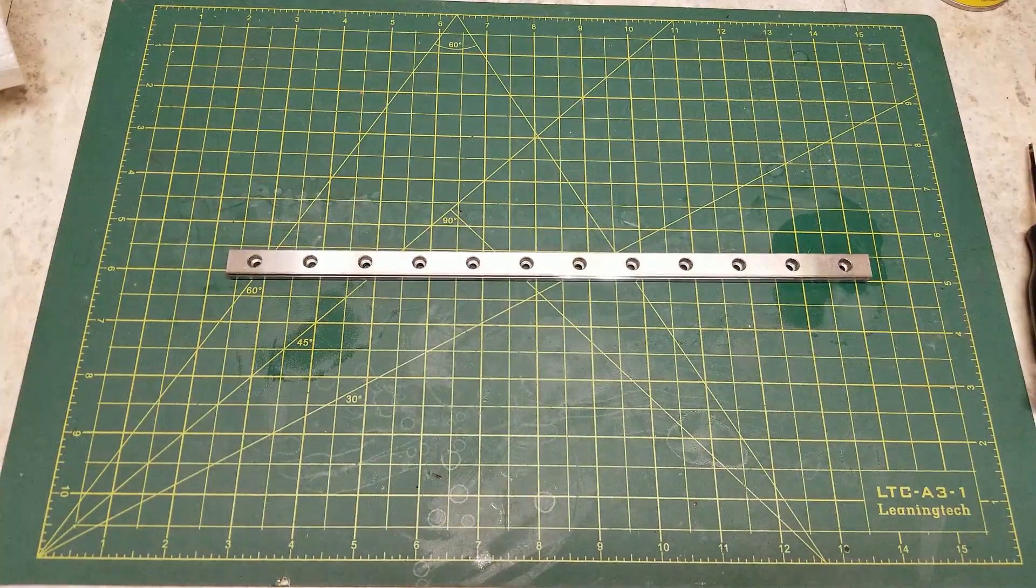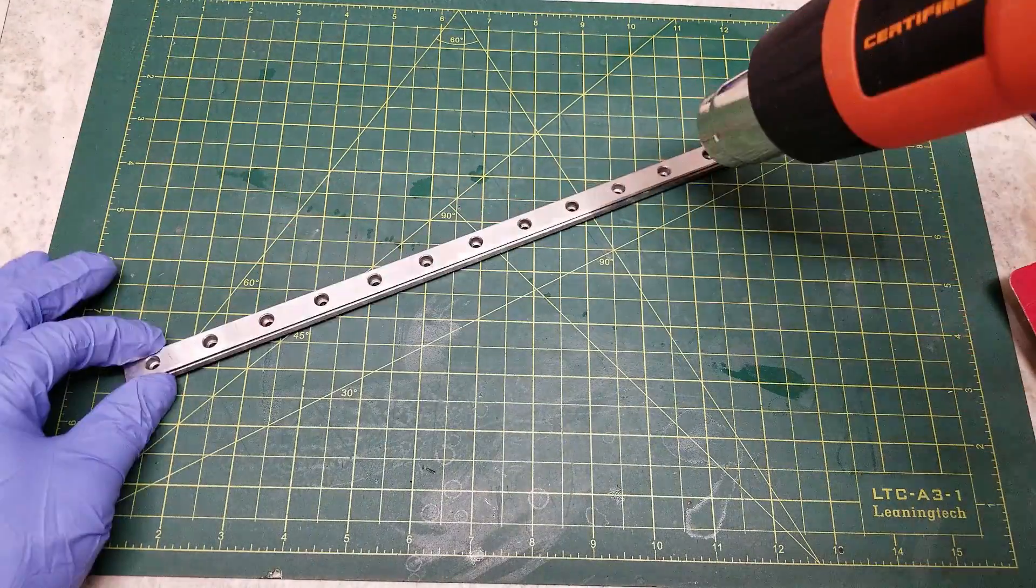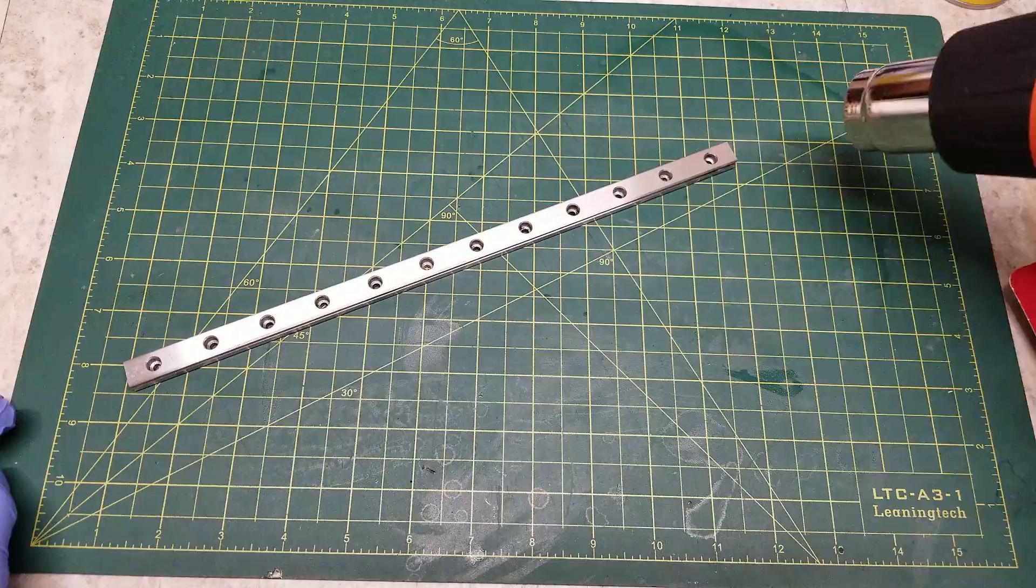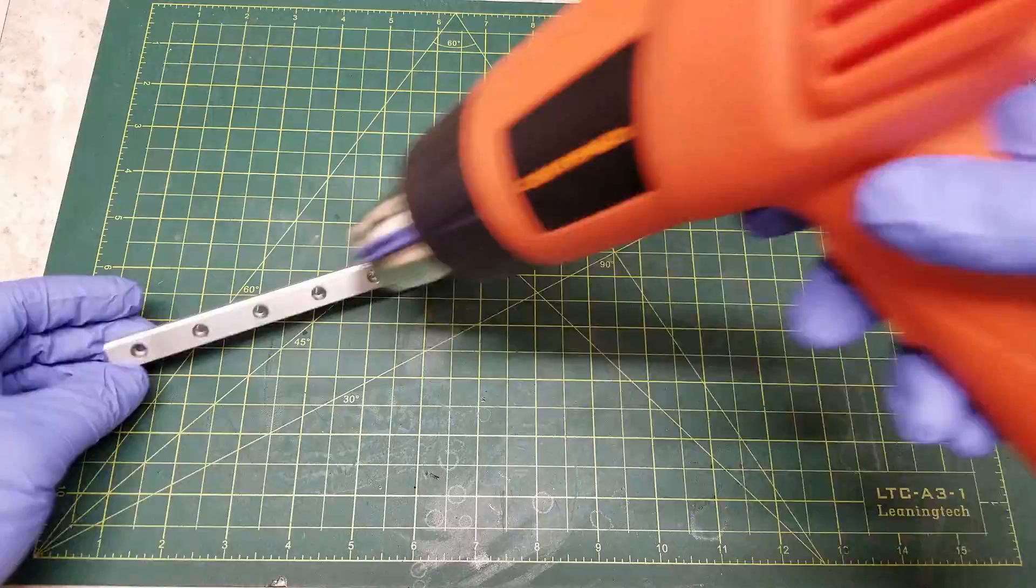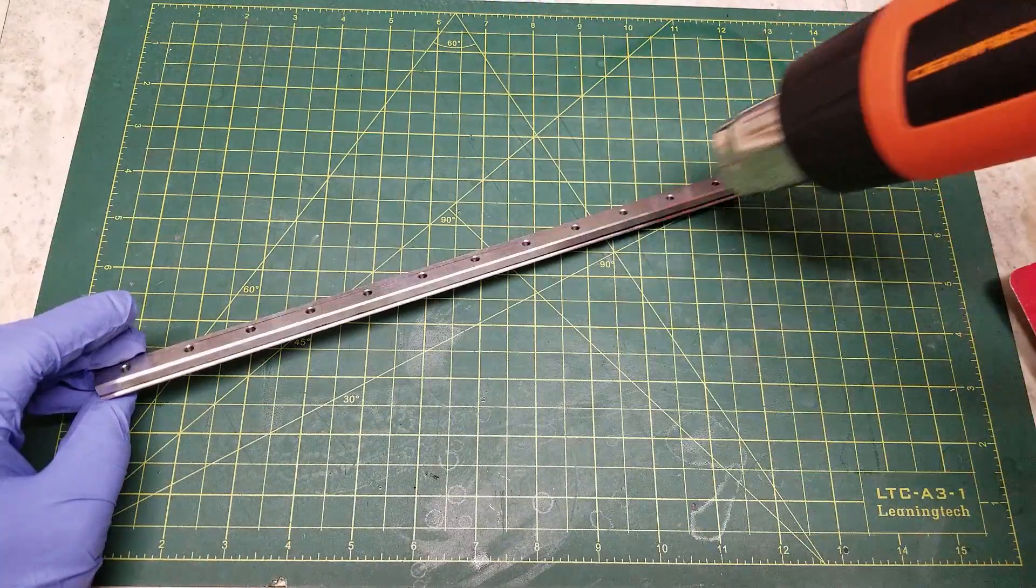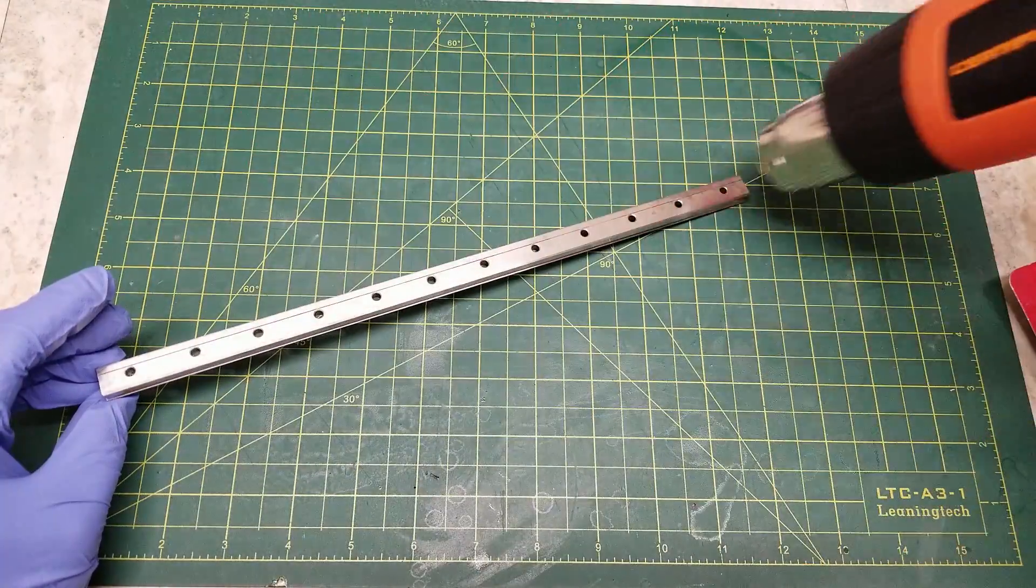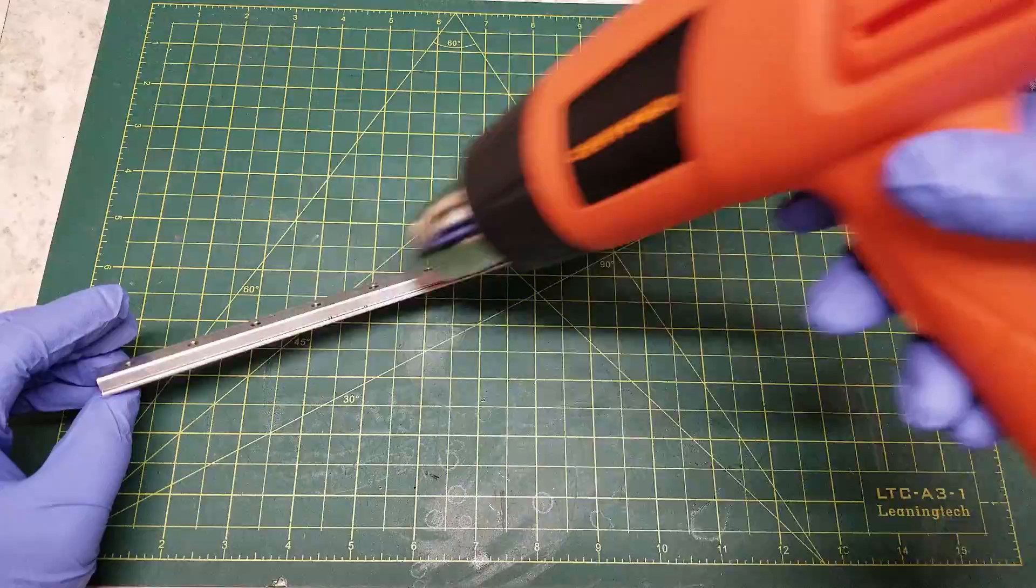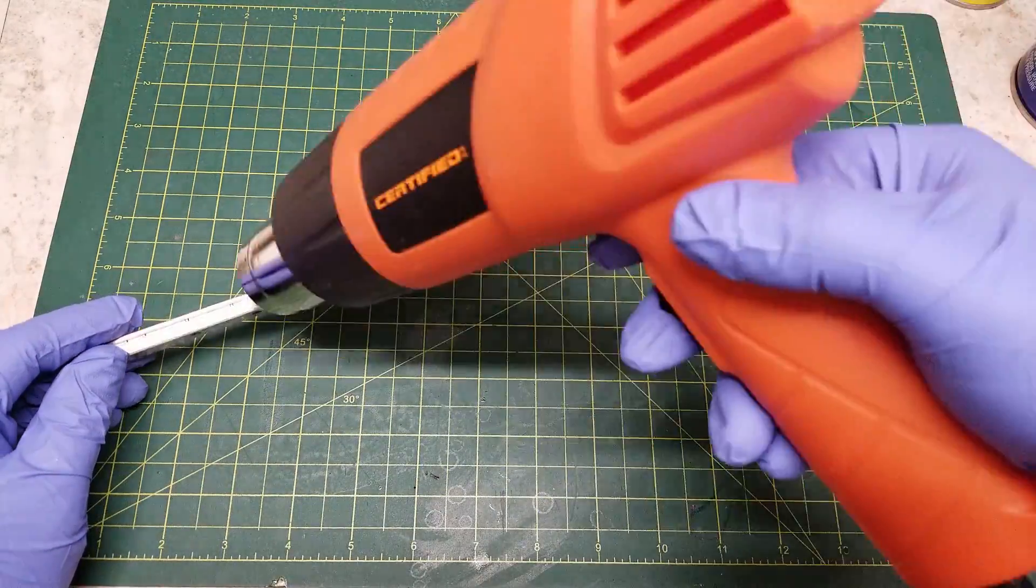And once the rail is clean I went ahead and hit it with a hot air gun. Now this is optional but I do find heating up the rail till it is warm but still touchable does lead to a cleaner blue. I find opening up the pores of the steel the blue takes better. And also this does help remove any moisture that is on the rail. The drier the rail and the cleaner it is the better the bluing will turn out.